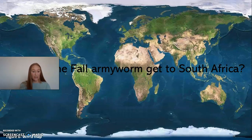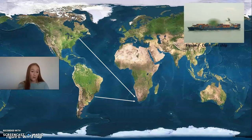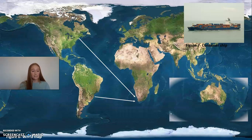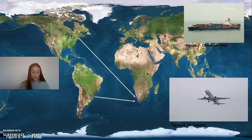There are many speculations as to how the fall army worm got to South Africa. Some suggest that it arrived with foodstuff. Another way it could have arrived is by wind currents, as the moth can travel large distances. It could also have entered as a stowaway on a commercial flight. Although there is no substantial evidence as to how it arrived, the damage it caused was astronomical.